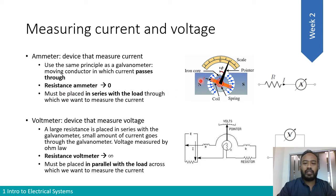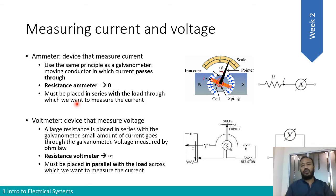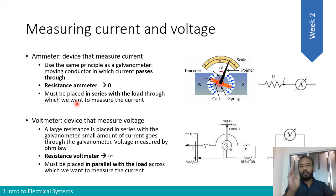In an ammeter, for the current to pass smoothly and create that mechanical movement, we need a resistance that tends towards zero. With that near-zero resistance, the current passes through the conductor, creating the force that moves the pointer. That is the basic principle of the ammeter.